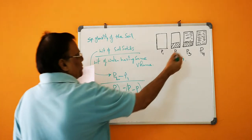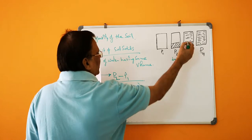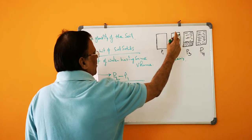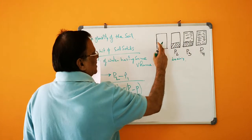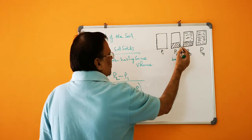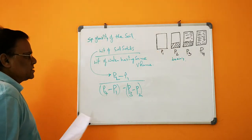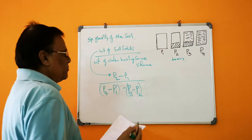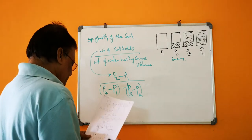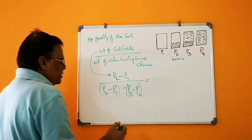So P3 minus P2 will be nullified and you get whatever water is there. This combination will give you water in the bottle because the unit weight of water is 1. So if you simplify this.